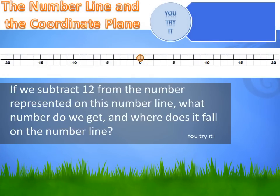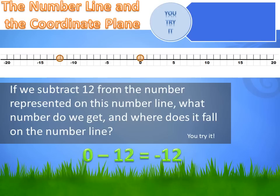If we subtract 12 from the number represented on this number line, what number do we get and where does it fall on the number line? The number represented on the number line is 0. If we subtract 12 from 0, we go to the left towards the smaller, negative numbers — 12 spaces to the left. We could plot that number right there: 0 minus 12 equals minus 12.